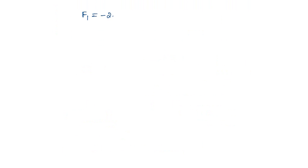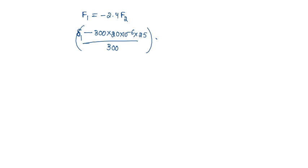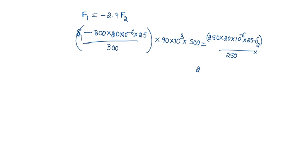F1 equals minus 2.4 F2 is the relation. F1 is (delta 1 minus L1 alpha1 T) by L1 into E1 into A1: L1 is 300, alpha1 is 20 into 10^-6, temperature decrease is 25, Young's modulus is 90 into 10^3 MPa, area is 500. For F2: L2 is 250, alpha2 is 20 into 10^-6, temperature is 25, delta 2 by 250, Young's modulus is 200 into 10^3, area is 250.